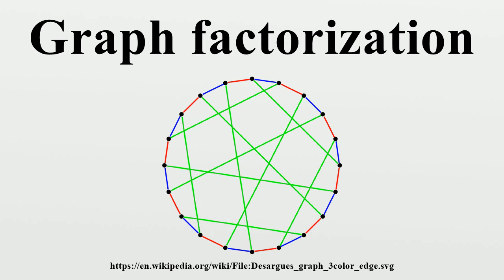Perfect one-factorization: A perfect pair from a one-factorization is a pair of one-factors whose union induces a Hamiltonian cycle. A perfect one-factorization of a graph is a one-factorization having the property that every pair of one-factors is a perfect pair. A perfect one-factorization should not be confused with a perfect matching.